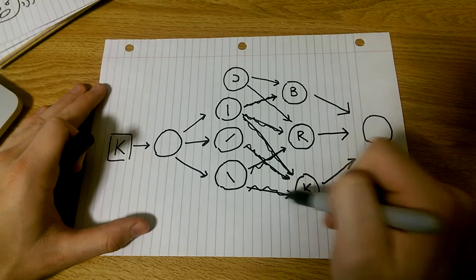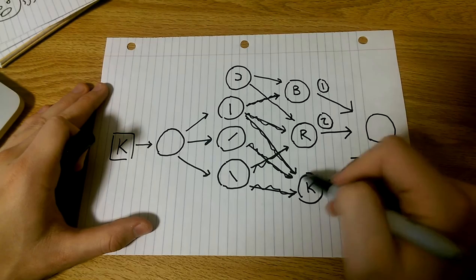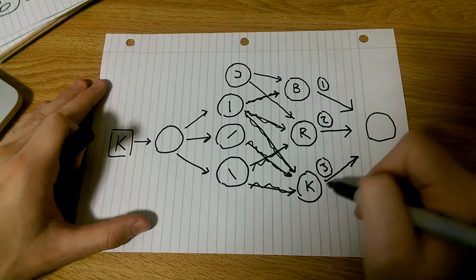So here we see that B is only getting one yell coming down its path. R is getting two and K is getting three. So the K cognitive demon will begin to yell the loudest and that will hit our decision demon here which will correctly identify this letter as the letter K.